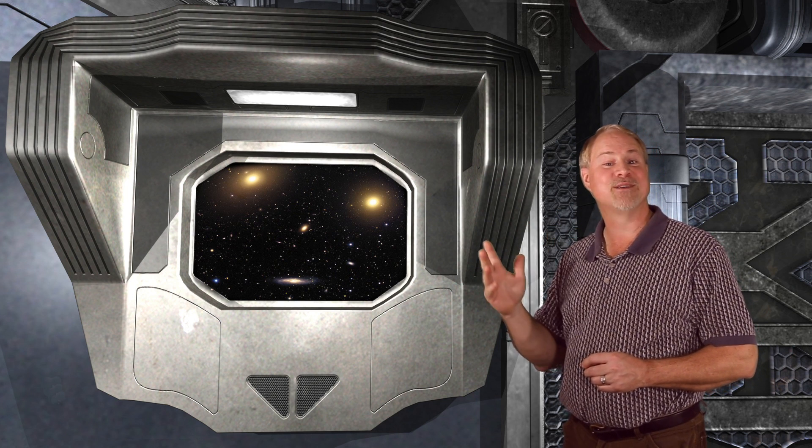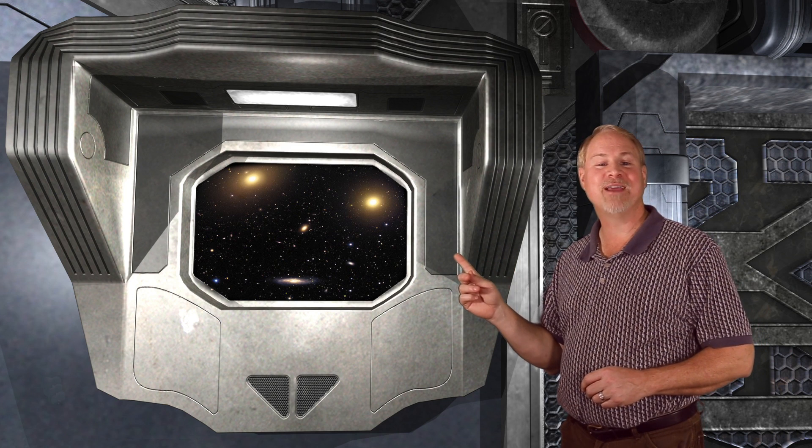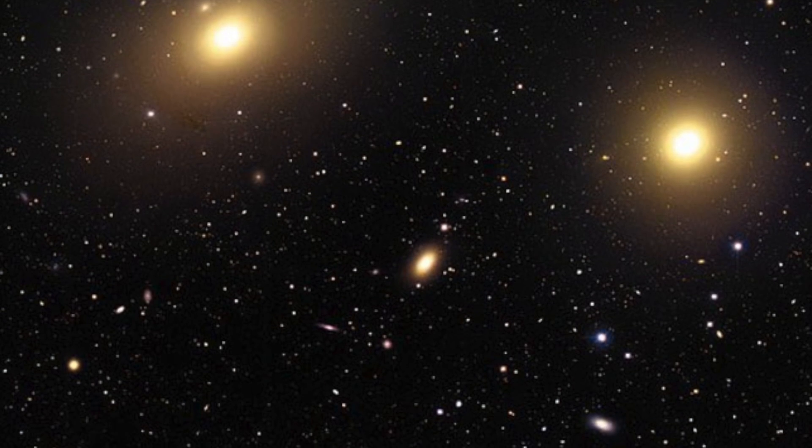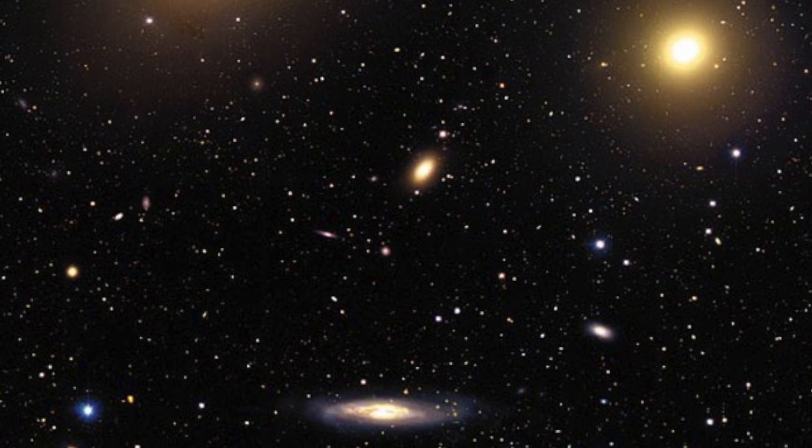This group is nicknamed, surprisingly, the Face. This image taken by the Canada-France-Hawaii Telescope on Mauna Kea shows the four galaxies in amazing detail, and you can see the group smiling at you.